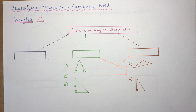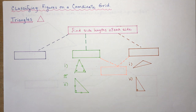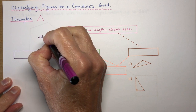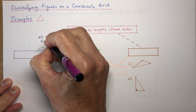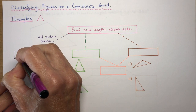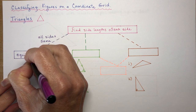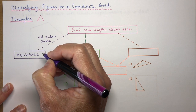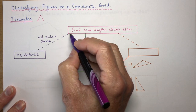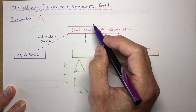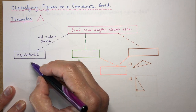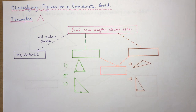To classify a triangle, the first thing you need to do is find the side lengths of each side. When all the side lengths are the same, you have an equilateral triangle. Properties of an equilateral triangle: all sides are equal and all angles are equal. So you don't have to worry about finding the angles — you classify it by shape. On a coordinate grid, you measure each side length, find they're all the same, and say you have an equilateral triangle.